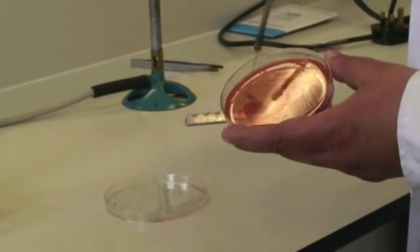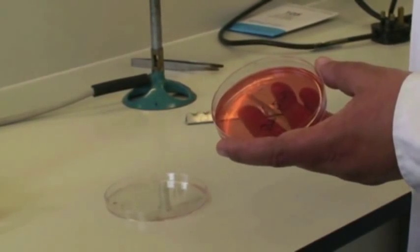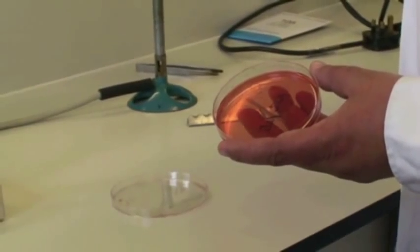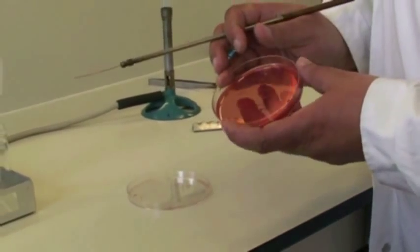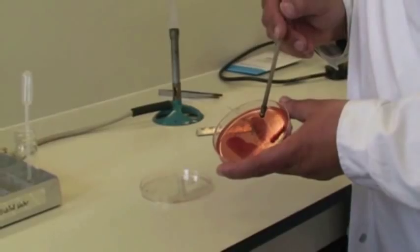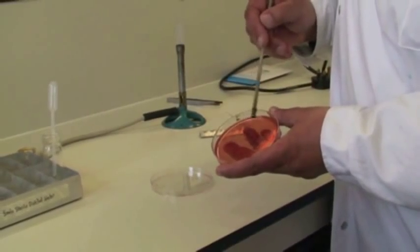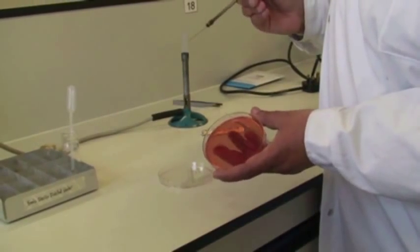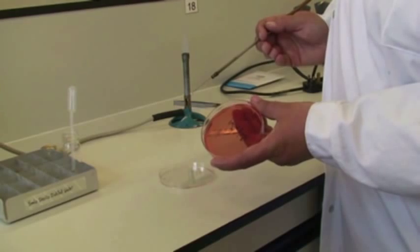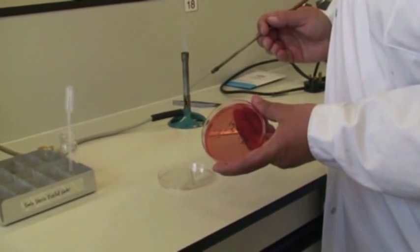Eventually, right at the very end, we're going to have nice pure colonies we can then do further work on if we need to. This will be the last one, and what you need to do with the last one is do a squiggle, so we can see those nice single colonies next time.